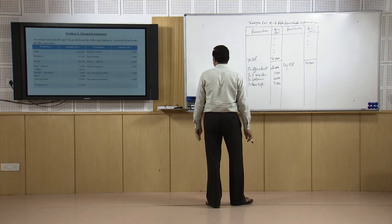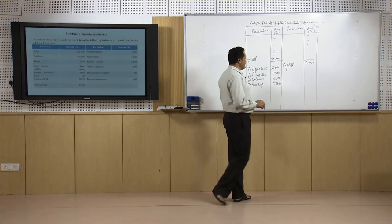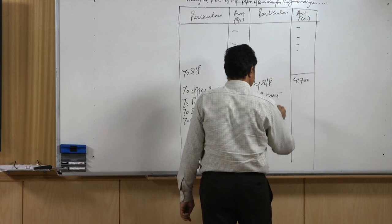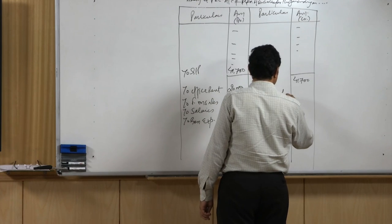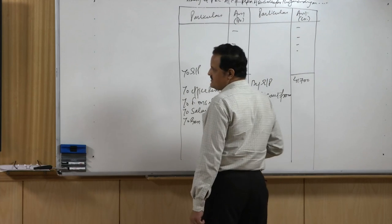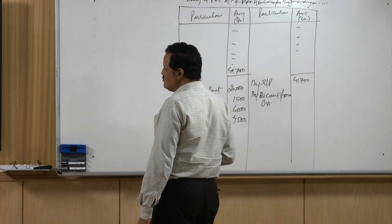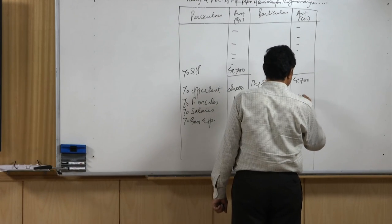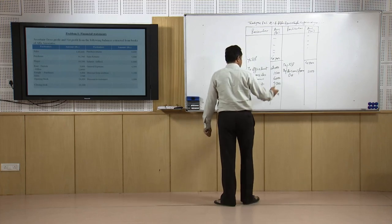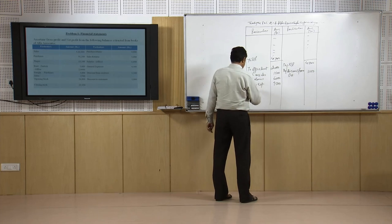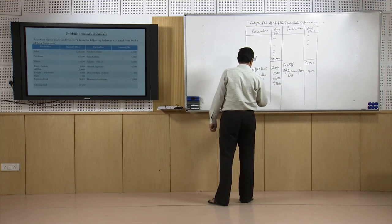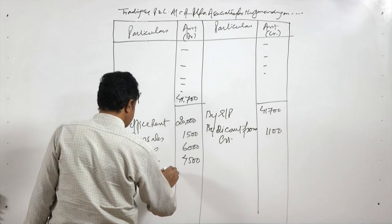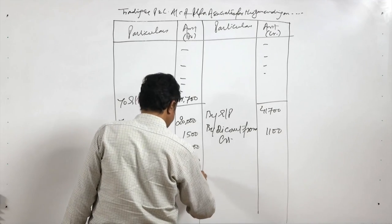Discount from creditors is a discount earned — it is income. So we write it on the income side: by discount from creditors — 1,100 rupees. This firm also pays discount to its buyers, so we record discount to customers on the expense side — 1,800 rupees.